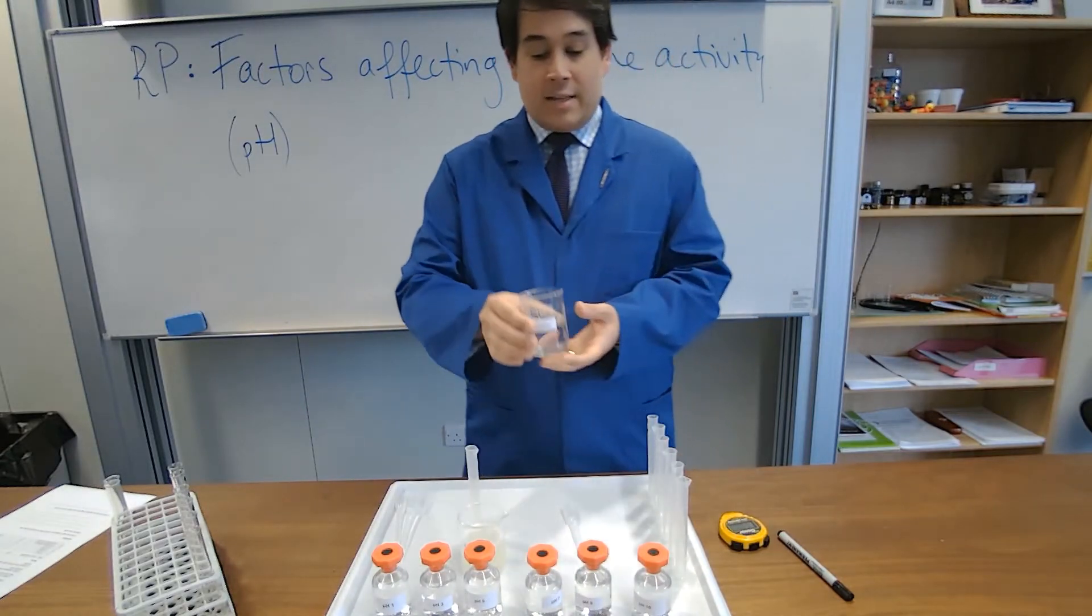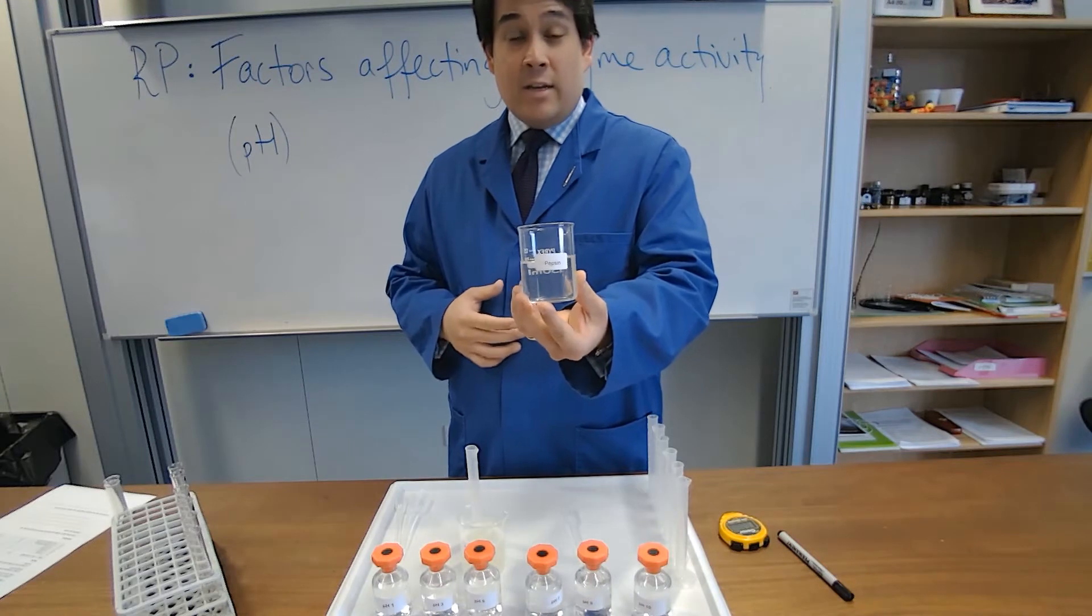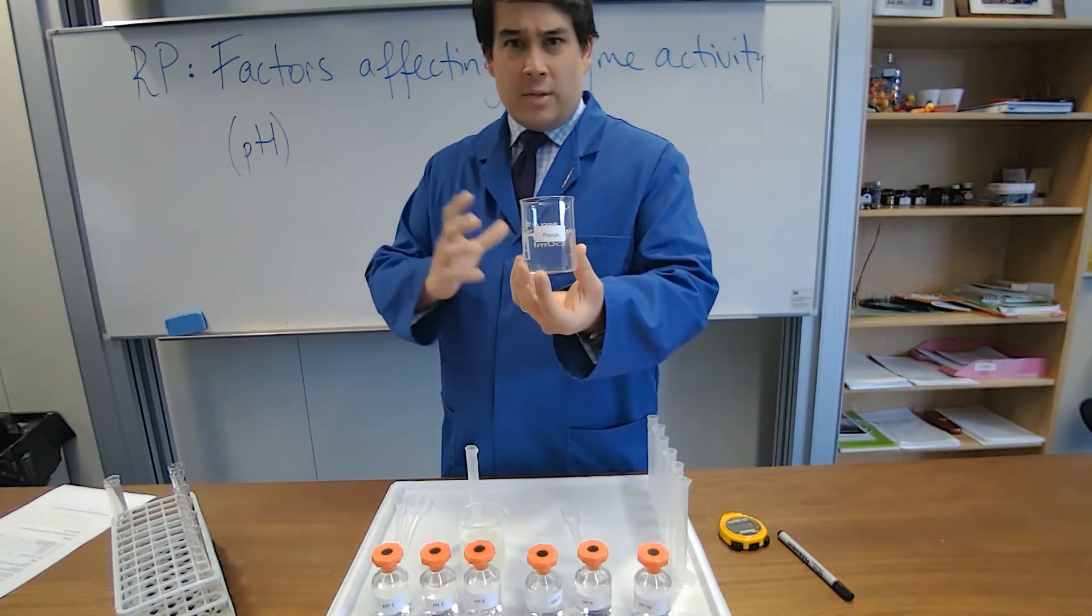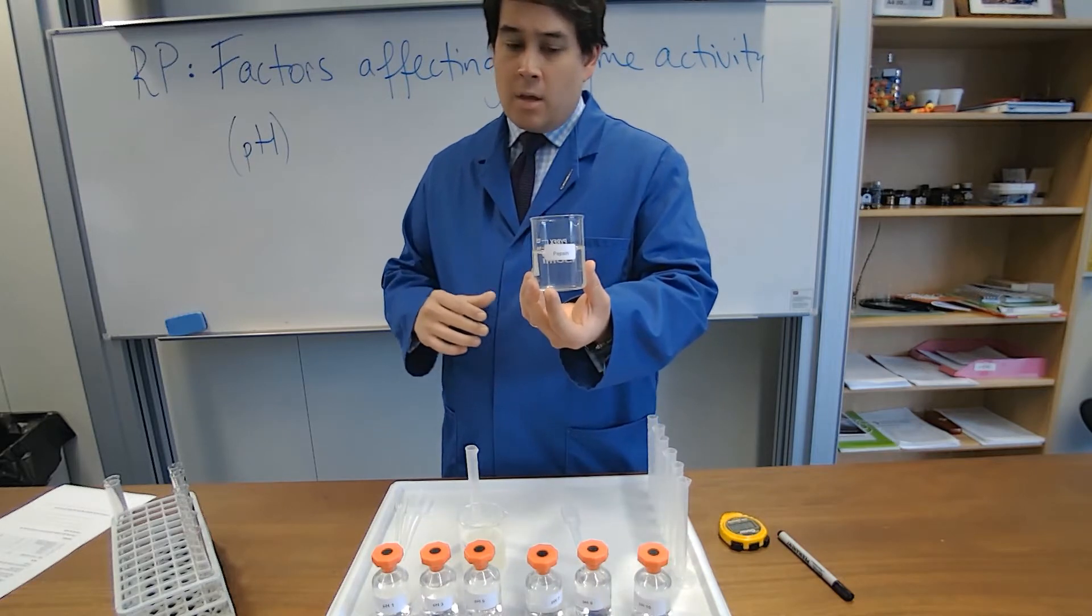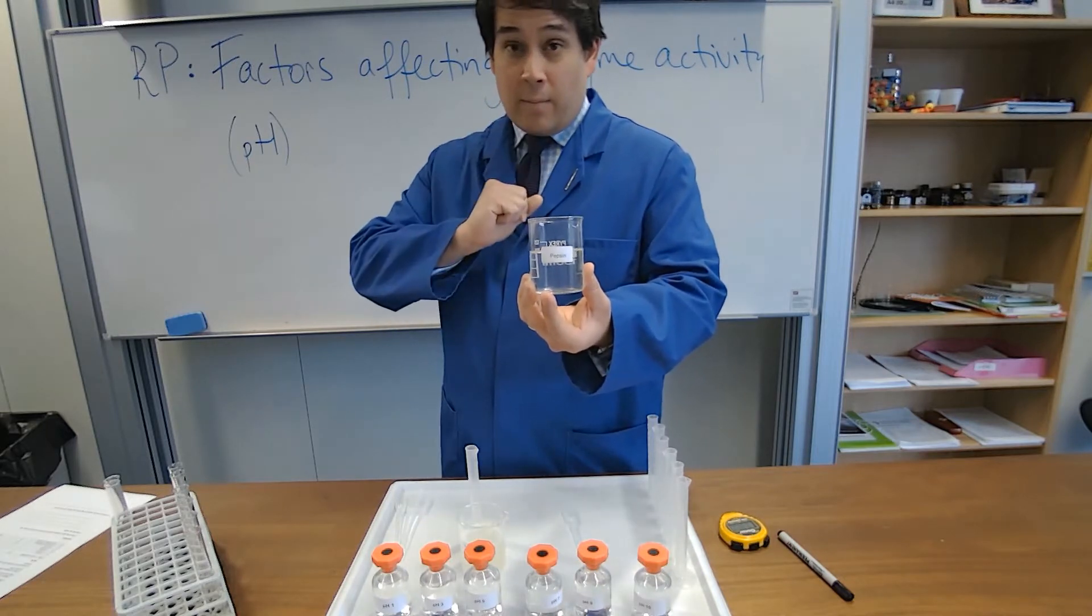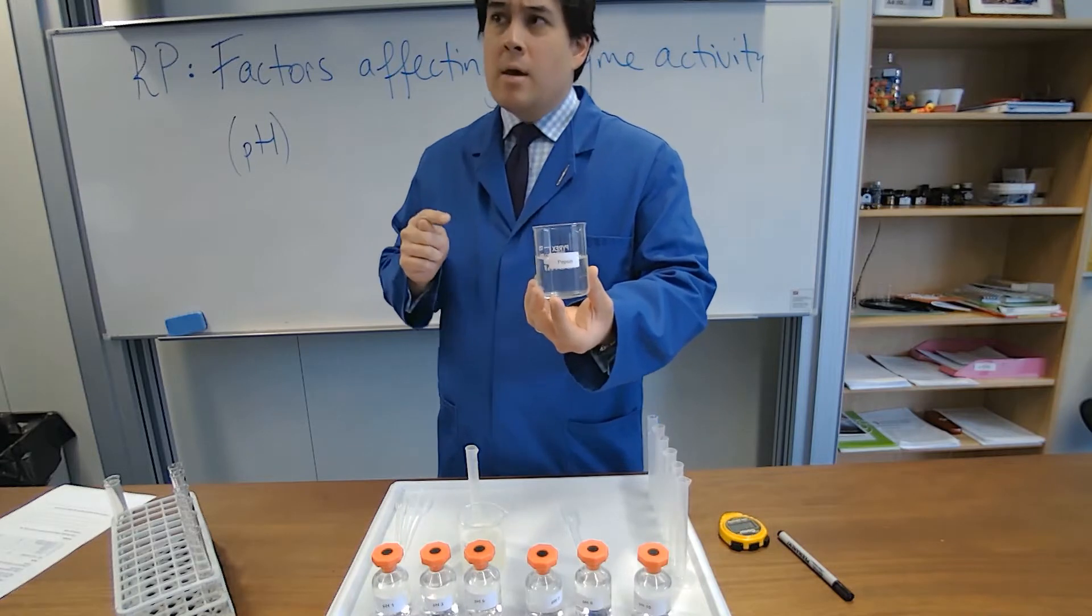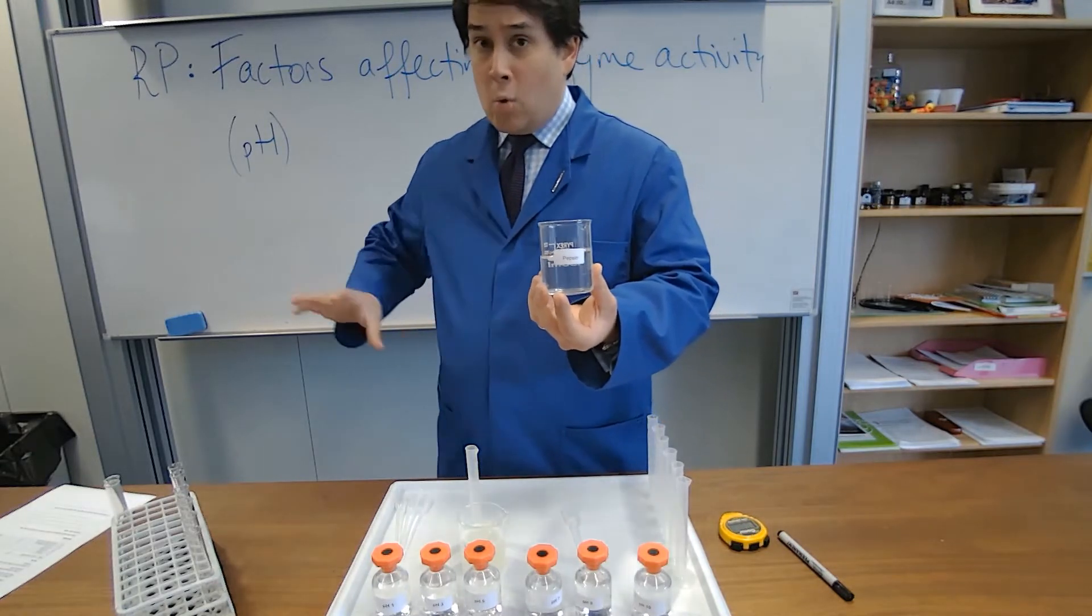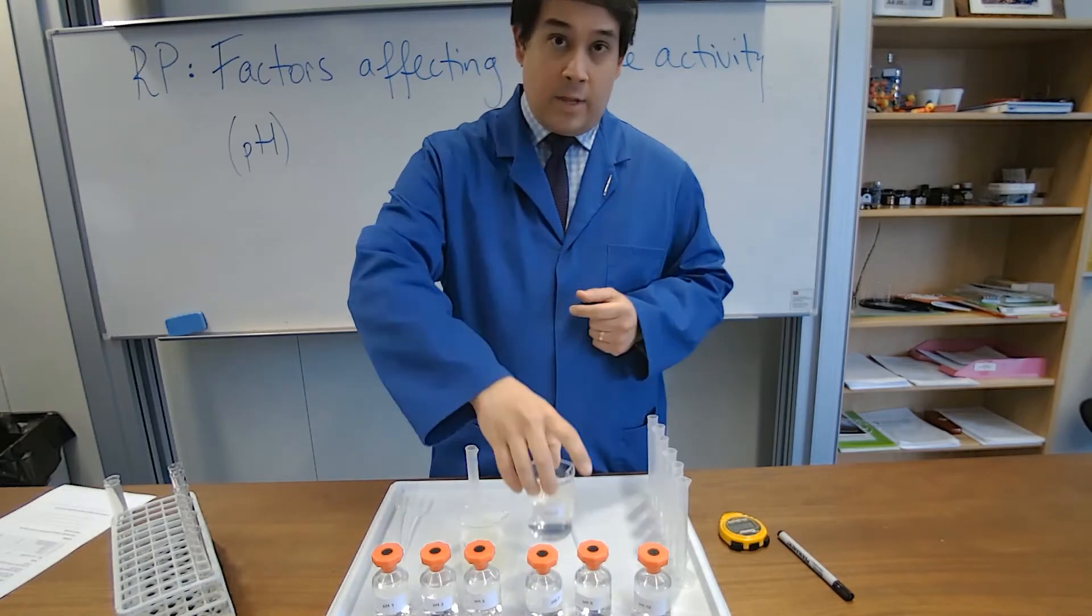So our enzyme today is called pepsin. It is an enzyme found in the stomach usually. It digests protein, so it is from the protease family. Now that should get you thinking, enzyme found in the stomach, it must therefore have an optimum pH that is quite low on the pH scale. We'll see whether that's the case.